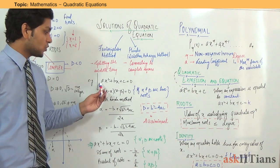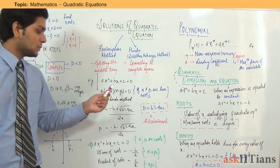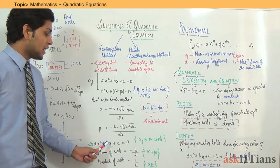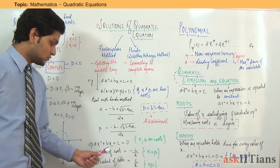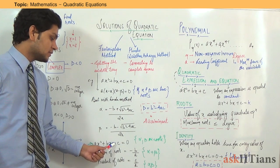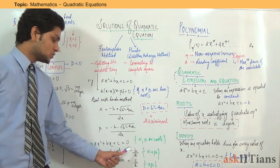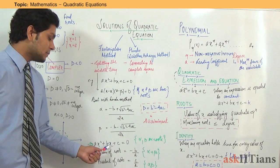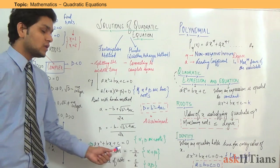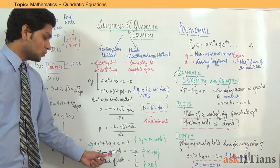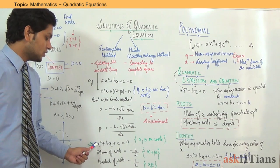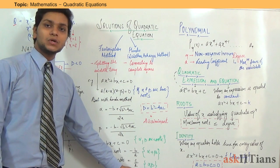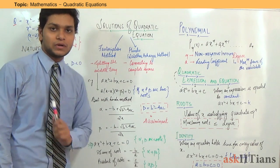Now we will find the relation between the roots and the coefficients of a given quadratic equation. Suppose I have ax² + bx + c, and alpha and beta are the roots. The sum of the roots is equal to −b/a, that is, the coefficient of x divided by the coefficient of x² with a minus sign. The product of the roots equals c/a, the constant term upon the leading coefficient.